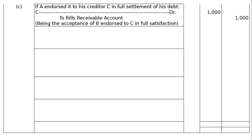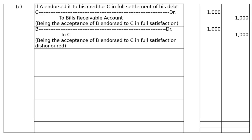Part C: if A endorsed the bill to his creditor C in full settlement of his debt — C debited to Bills Receivable Account Rs.1000 — being the acceptance of B endorsed to C in full satisfaction. There is no discount; the bill is endorsed for the full Rs.1000. If dishonoured: B debited to C — being the acceptance of B endorsed to C in full satisfaction dishonoured.